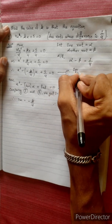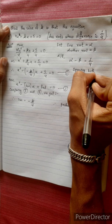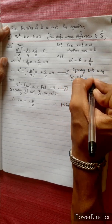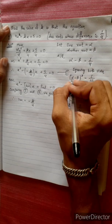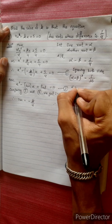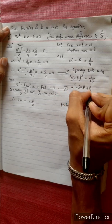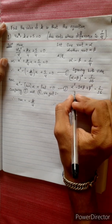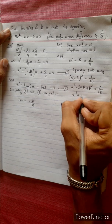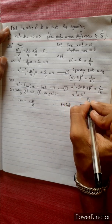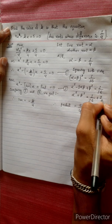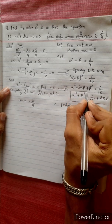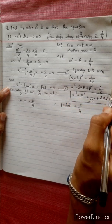Let's try squaring both sides. Alpha minus beta squared equals 1 by 16. Using the formula (A minus B)², we get: alpha squared minus 2 alpha beta plus beta squared equals 1 by 16. Now, alpha squared plus beta squared equals 1 by 16 plus 2 alpha beta.